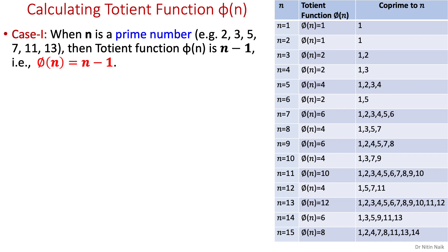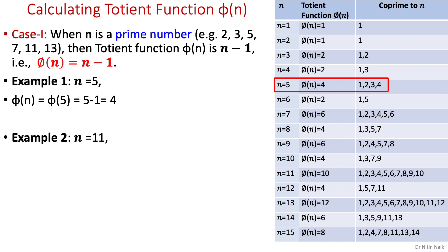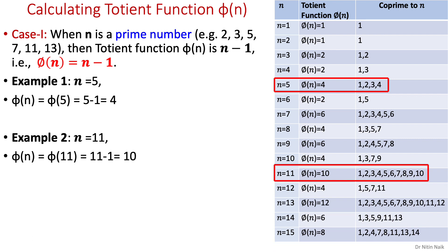Let's look at case 1: when n is a prime number. In this case, the Totient function phi(n) is n minus 1. For example, the Totient function of prime number 5 is 5 minus 1 equals 4 — correct per the table. Another example: Totient function of prime number 11 is 11 minus 1 equals 10 — also correct in the table.